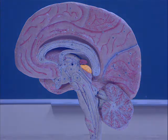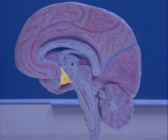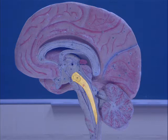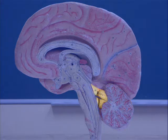From a sagittal cut, we can see the superior colliculi, the inferior colliculi, and the hypothalamus. Behind the hypothalamus is the reticular formation, which is involved in sleep and arousal. In the superior portion of the reticular formation, we can find the substantia nigra, which sends its projections towards the striatum. The cerebellum is easy to find, and is connected to the rest of the brain by the cerebellar peduncle.